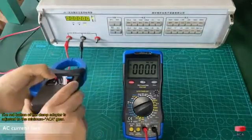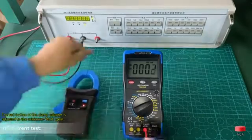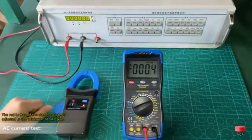AC current test: The red button of the clamp adapter is adjusted to the minimum ACA gear.